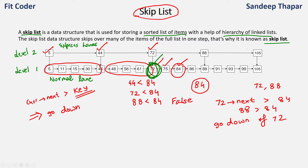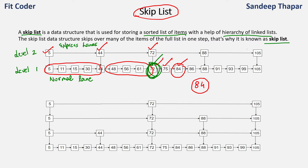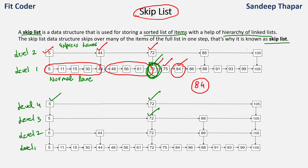Let's look at a second example where we have four levels in the skip list. The number of levels can vary depending on the size of the list. If we have to search 84, we start from the topmost node. Next of current is 72, which is less than 84, so we come to 72. Next of 72 is 105, which is greater than 84, so we go down. Next of 72 at the next level is 88, again greater than 84, so we go down again, then find 75 and 84. This is how skip list helps us skip nodes for faster searching.